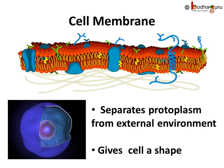Plasma membrane is also known as the cell membrane and it is the outer membrane of the cell that separates protoplasm from the external environment. It is a mechanical barrier that protects the cell content and also provides a definite shape to the cell, because protoplasm is like jelly.